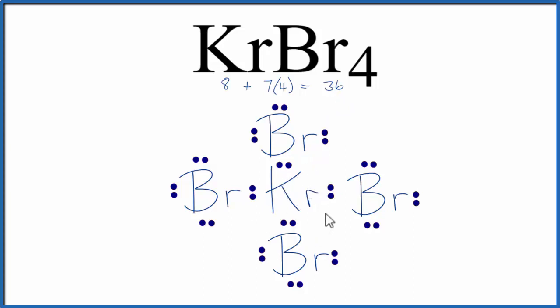It turns out that krypton can have an expanded octet, so we can put those on the central krypton atom. Put a pair here, and let's stick another pair down here. So the bromines still bonded to the krypton, so they have 8 valence electrons each. The krypton has 12 valence electrons, but that's okay. And this is the Lewis structure for KrBr4.